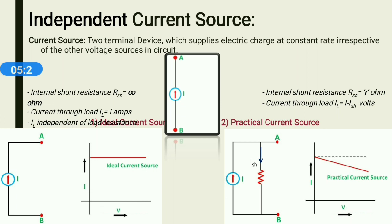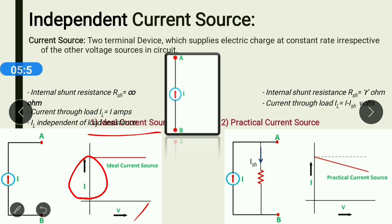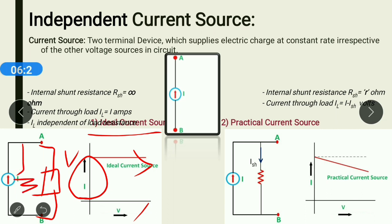Let us move to the concept of the independent current source. This type of source is independent, so the output quantity will not depend on any other quantity. Ideal current sources are sources which have a constant magnitude of current throughout the time, irrespective of terminal voltage or load voltage. We can connect any type of load at these terminals, and even if a terminal voltage is imposed on the current source, the value of the output current cannot be altered.